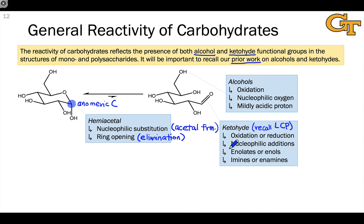The carbonyl carbon is subject to nucleophilic additions, and we can form enolates or enols at the carbon alpha to this carbonyl group. Finally, that carbonyl group is susceptible to condensations with nitrogen-containing amines to form imines in the case of a primary amine, or enamines in the case of a secondary amine. We'll see examples of all of these kinds of reactivity in the ensuing slides.